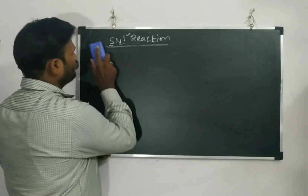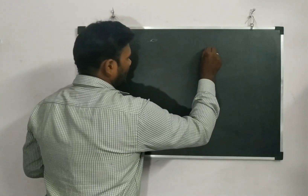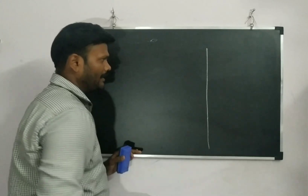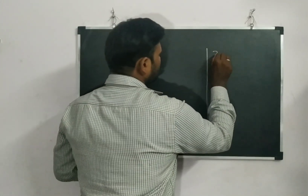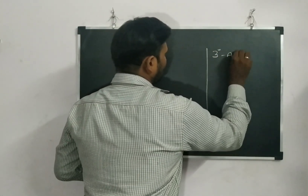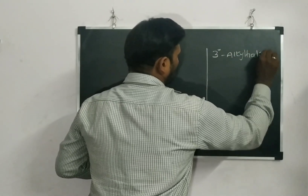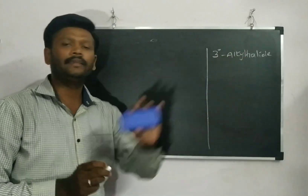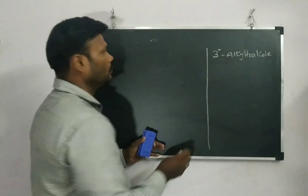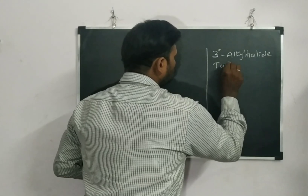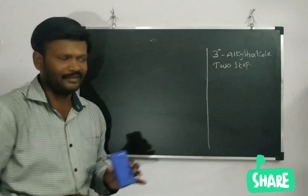Now we can see what the SN1 reaction is. There are some conditions we have to satisfy. The first condition is a 3rd degree alkyl halide — a 3rd degree alkyl halide will be involved. It is a 2-step process.